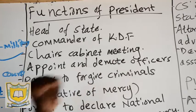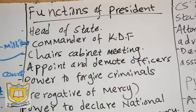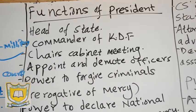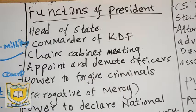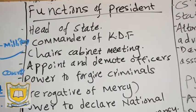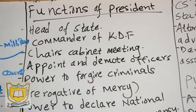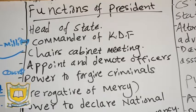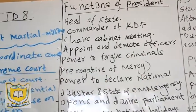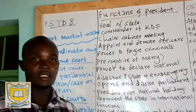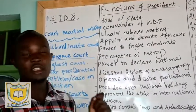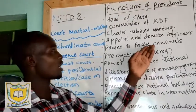Then he chairs the cabinet meeting. During the cabinet meeting, the president is the one who is the chairperson of the meeting. Then he appoints and can demote officers like the cabinet secretaries. You saw the other time the president demoted some cabinet secretaries from the government and appointed new ones — that's what we are talking about here.